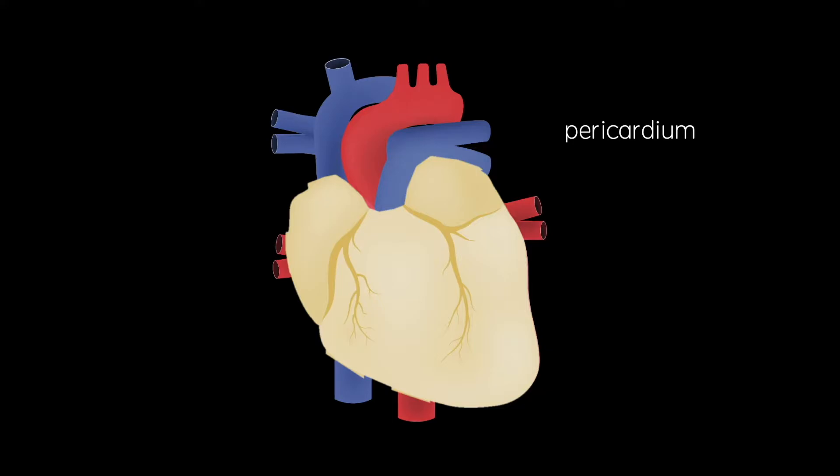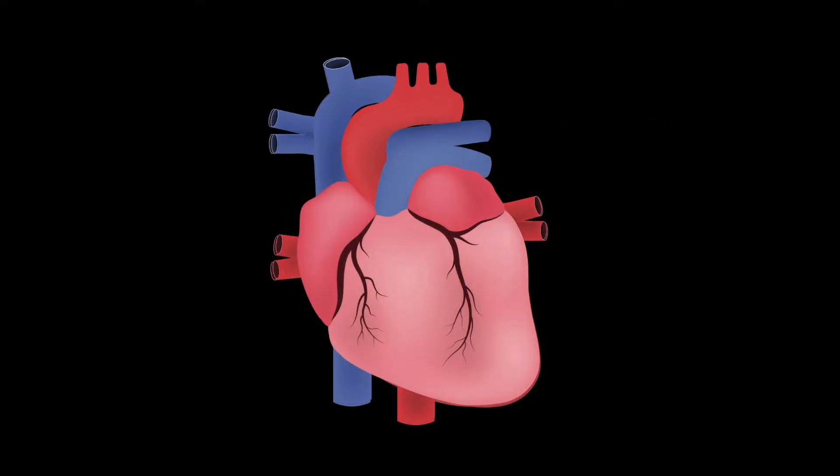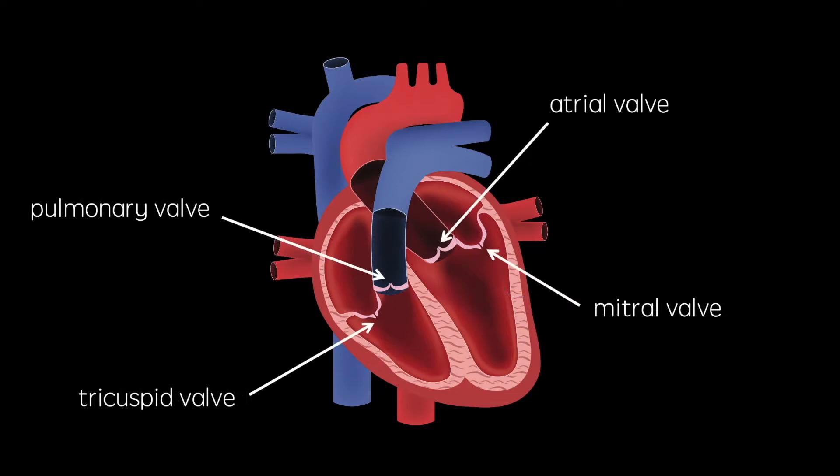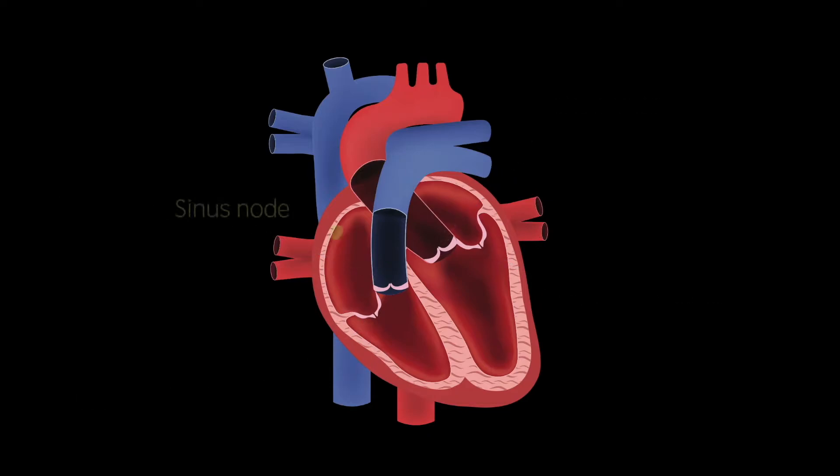The heart is comprised of four chambers, the left and right atria and the left and right ventricles. It also contains four valves, the aortic, mitral, tricuspid, and pulmonary valves. And finally, there are two nodes, the sinus node and the atrioventricular node.